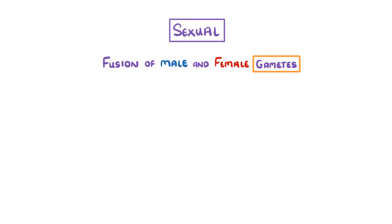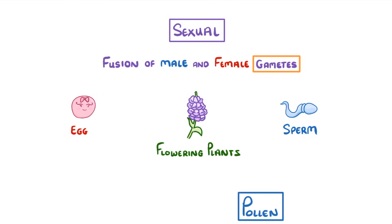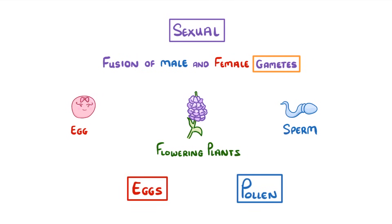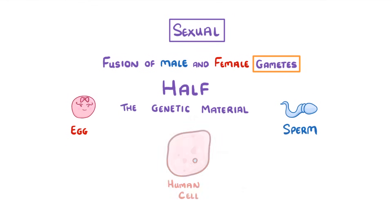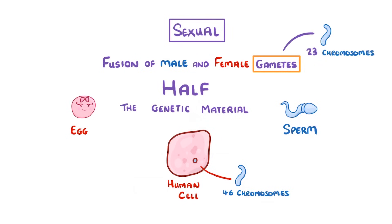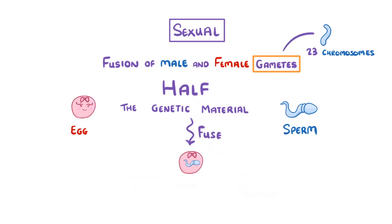Gametes are cells like sperm and eggs in animals, or when looking at flowering plants, pollen and eggs. The important thing about gametes is that they only have half of the genetic material of a normal cell. So whereas a normal human cell has 46 chromosomes, a human gamete only has 23. This means that when the two gametes fuse together, the resulting cell will have 46 chromosomes again, just like a normal cell.